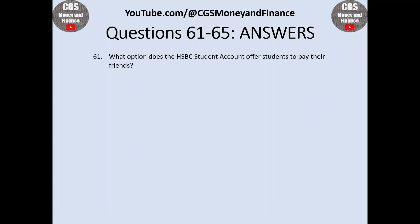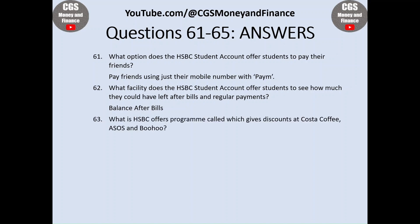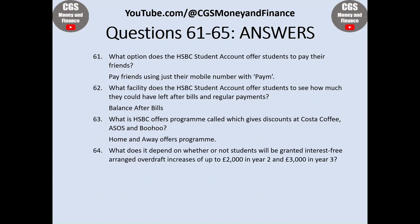Question sixty-one: HSBC offer students the ability to pay friends using just their mobile number with Payme. Question sixty-two: HSBC offer a 'balance after bills' facility to see how much students could have left after bills and regular payments. Question sixty-three: the programme is called the Home and Away offers programme, giving discounts at Costa Coffee, ASOS and Boohoo. Question sixty-four: interest-free arranged overdraft increases are subject to status and how the account has been used.